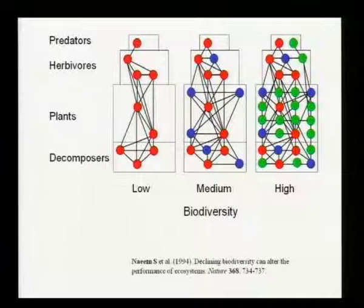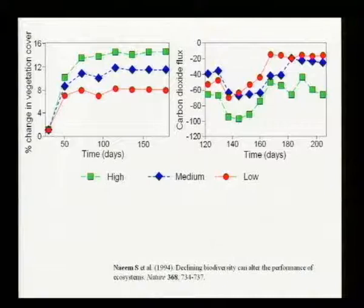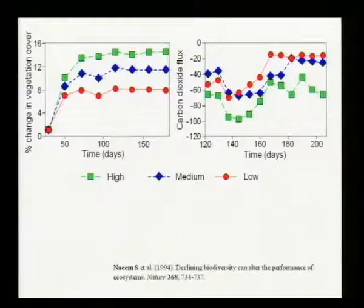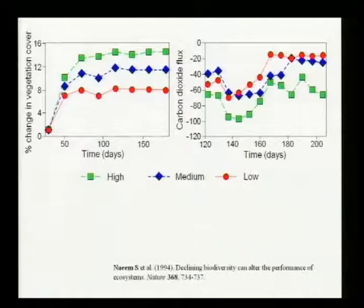Over about half a year, the low biodiversity case ends up with lower productivity overall — only a few plant species can't take up available energy as well as in the high biodiversity case. Carbon flux is lower and less variable with high biodiversity. So biodiversity contributes to system function by enhancing total primary productivity and the stability of carbon flux. That work was done in the 1990s and is pretty much finished now.